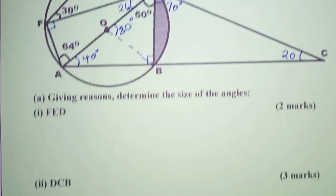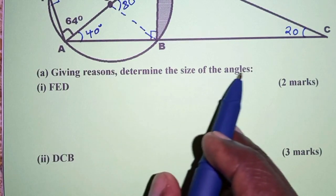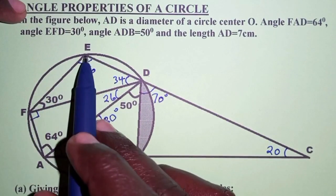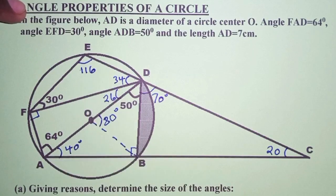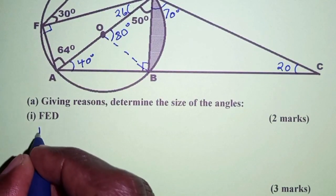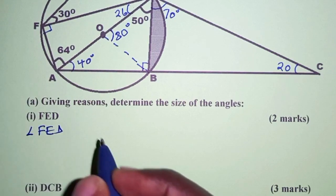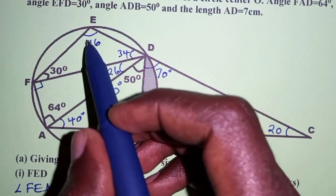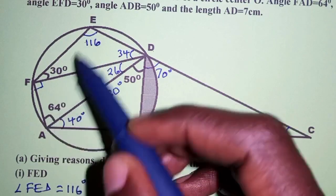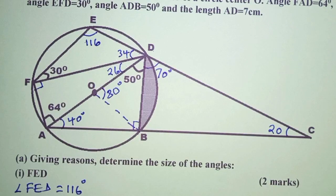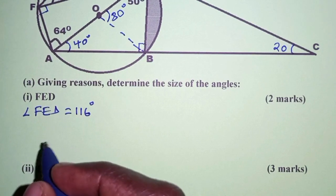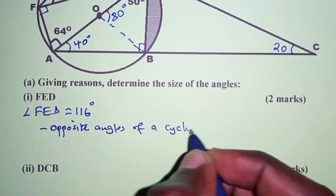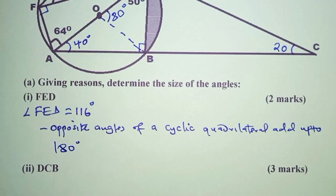We can now go to the equations. Giving reasons, determine angle FED. We already determined it — angle FED is 116 degrees. The reason: when determining this angle, we considered the opposite angles of a cyclic quadrilateral, which add up to 180 degrees.